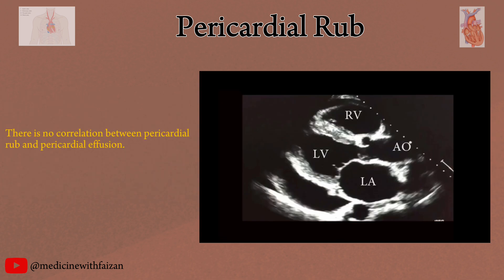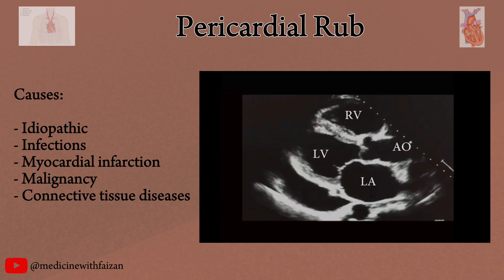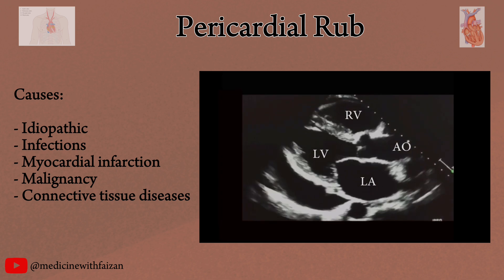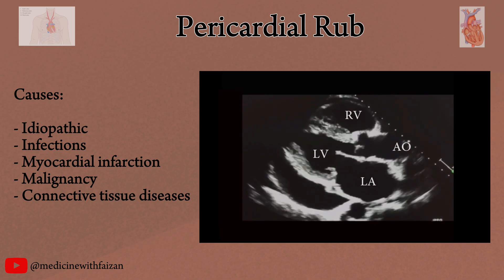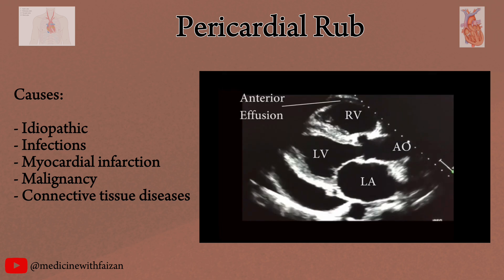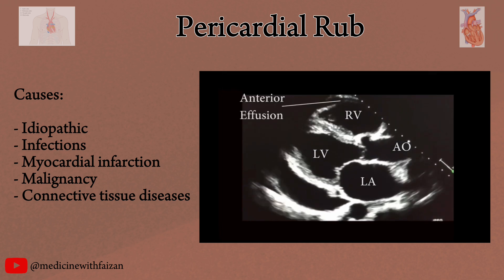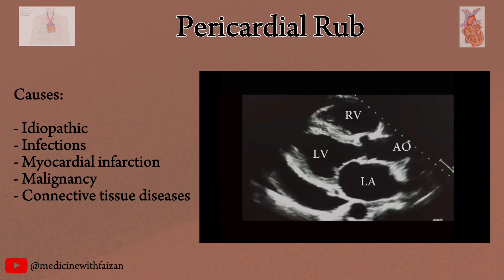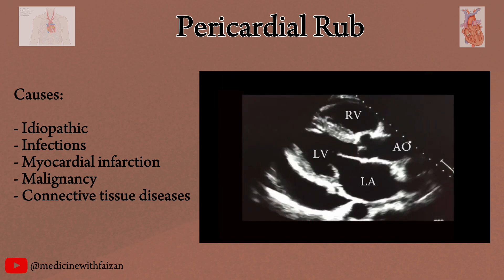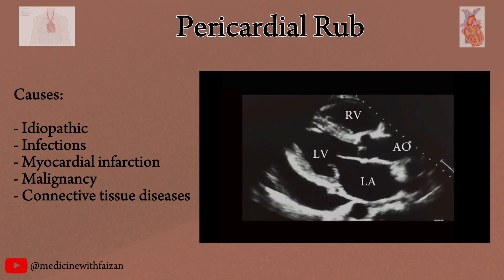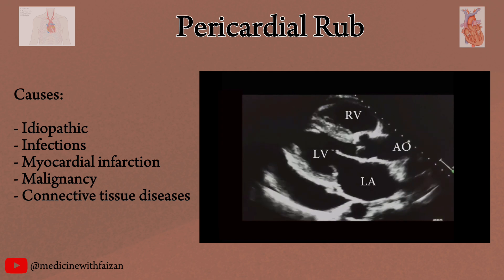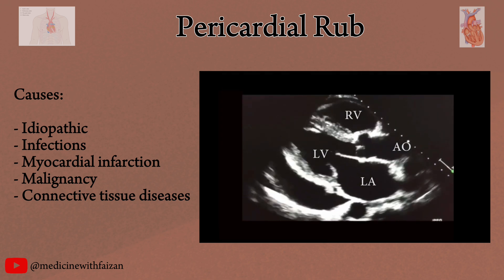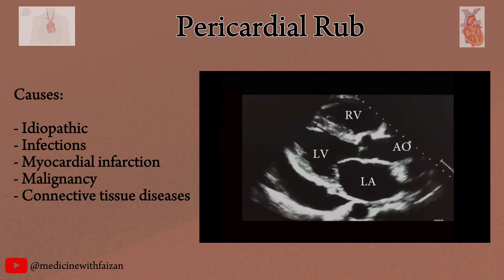Remember that there is no correlation between pericardial friction rub and pericardial effusion. A pericardial friction rub can occur regardless of whether the effusion is mild, moderate, or massive. Pericarditis is most commonly idiopathic, but can also occur due to infectious causes including viral, pyogenic, and tuberculosis infections. Tuberculosis is one of the leading causes of pericarditis in developing countries. Non-infectious causes include myocardial infarction, uremia, malignancy, and connective tissue diseases. That was all about the most common heart sounds. The remaining heart sounds are less common and will be covered in another video. Thank you.